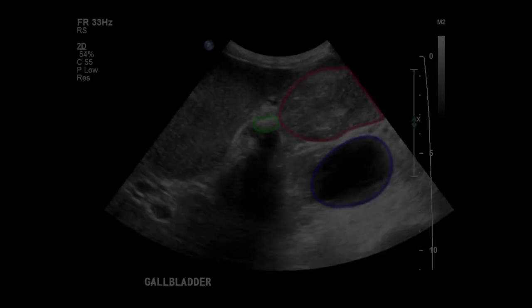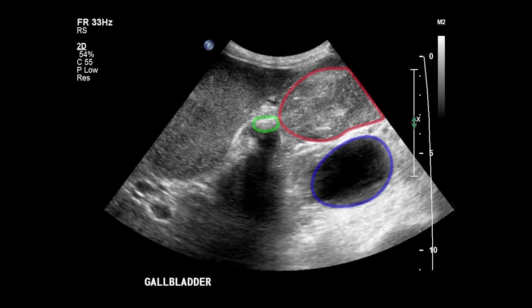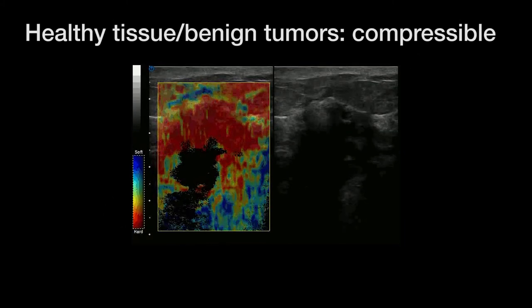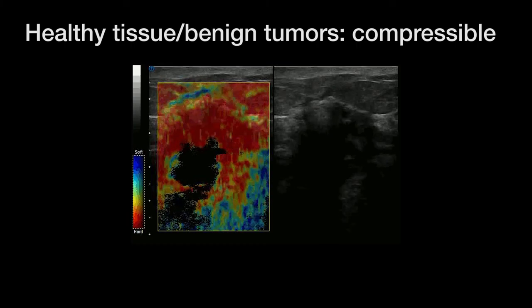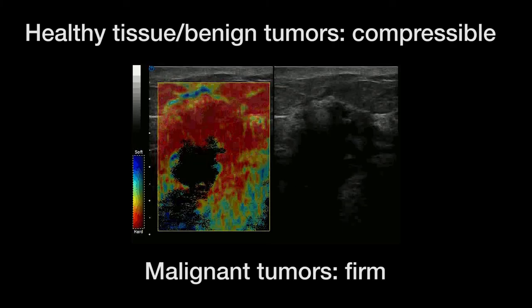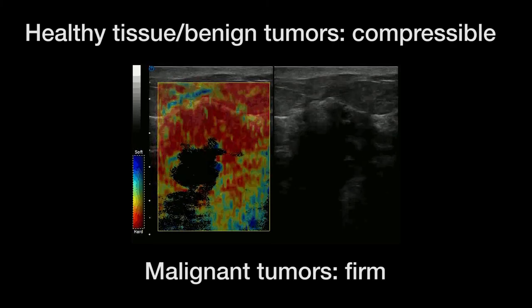Another form of functional ultrasound, elastography, can be used to differentiate tumors from healthy tissue based on the tissue's relative stiffness. Healthy tissue and benign tumors tend to be compressible, unlike malignant tumors, which are more firm.